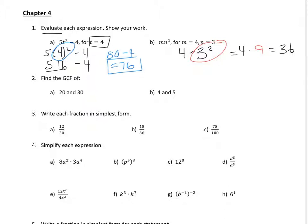Number 2, find the GCF. GCF stands for greatest common factor. Factors are smaller than the numbers. So to factor out 20, you do the rainbow. So 1 and 20, 2 goes with 10. 3 doesn't work. 4 and 5 work. So those are my factors.